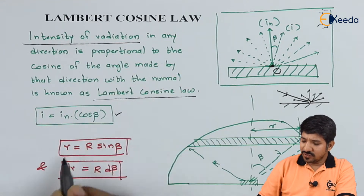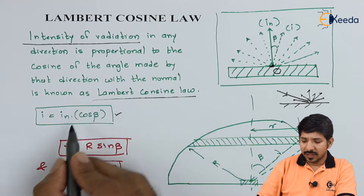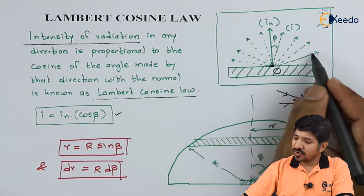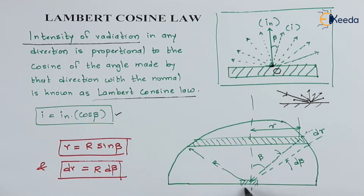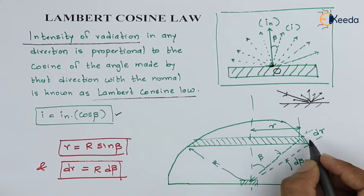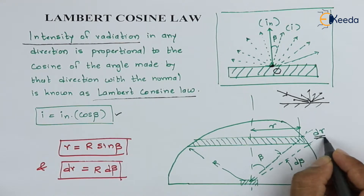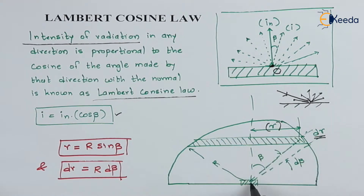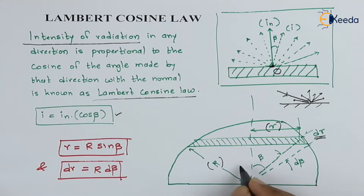Now, let us use Lambert's cosine law to prove something. For this, we will make a hemisphere. Consider a small elementary area DA, with radiation thrown in all hemispherical directions. Let us consider a small hemispherical ring. The thickness of the ring is DR, the radius of the ring is small r, and the actual radius of the hemisphere is capital R. These are the nomenclatures we are using.